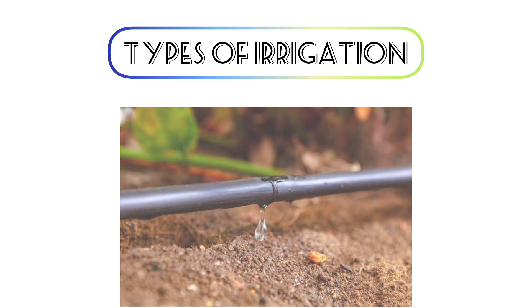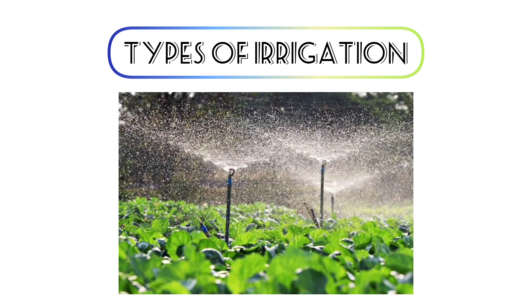Next is sprinkler irrigation, where water is scattered throughout the land by high-pressure sprinklers or guns from a moving platform that sprinkles as it moves.